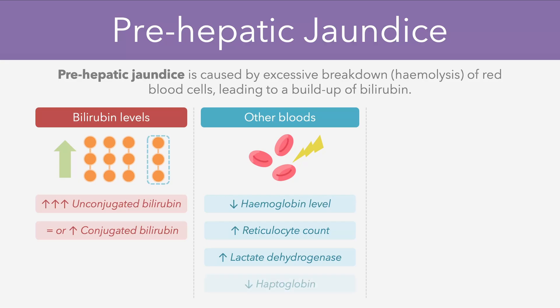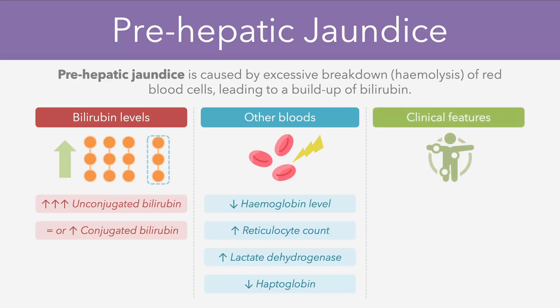There can also be a decrease in a substance known as haptoglobin, which basically helps to clear free hemoglobin in the blood. So if more red blood cells are being broken down, more haptoglobin is being used up. In terms of the clinical features, patients with a pre-hepatic jaundice may develop anemia symptoms such as shortness of breath or fatigue, in addition to splenomegaly in some cases. The urine and the stools of patients are often normal in a pre-hepatic jaundice, because the bilirubin can still enter both the kidneys and the gut appropriately.